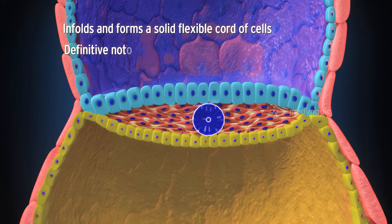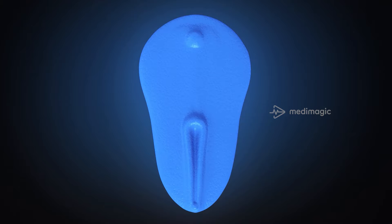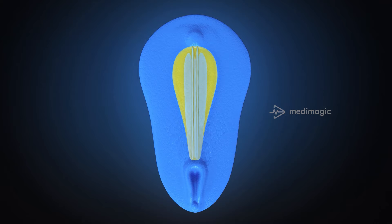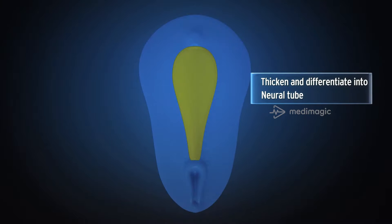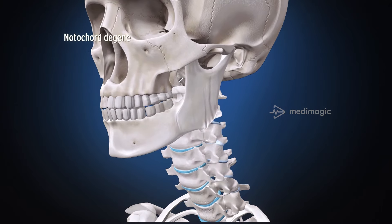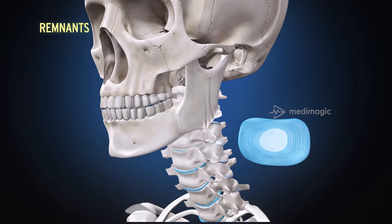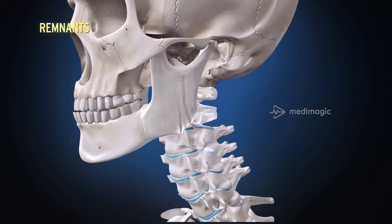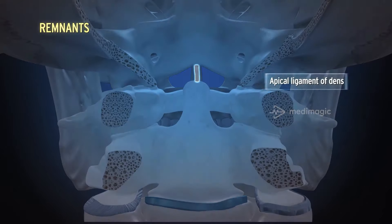This solid flexible chord is known as the definitive notochord. The notochord functions as a primary inductor — it stimulates the development of the primitive vertebral column and induces the overlying ectoderm to thicken and differentiate into the neural tube. The notochord degenerates with the beginning of the formation of the vertebral body. The remnants of the notochord remain as the nucleus pulposus of the intervertebral disc and the apical ligament of dens.